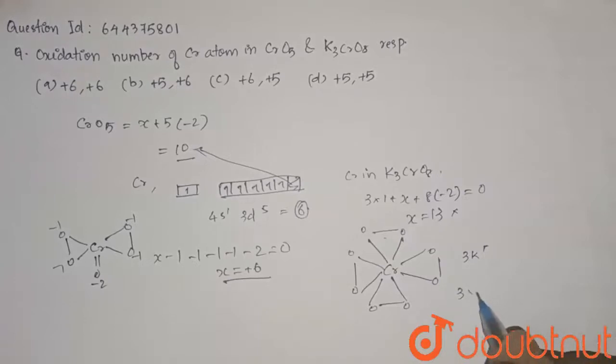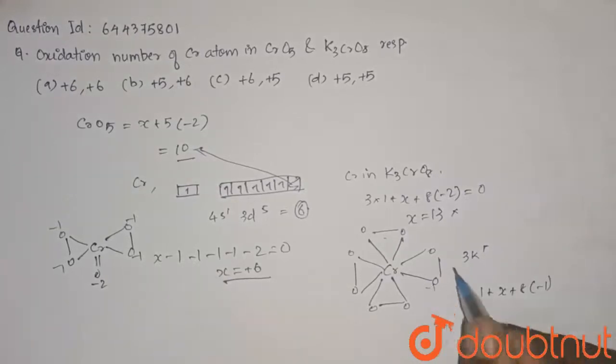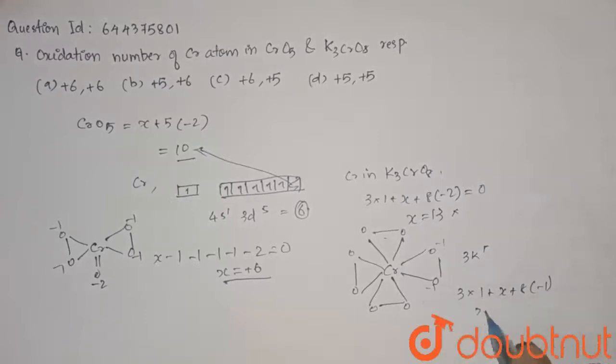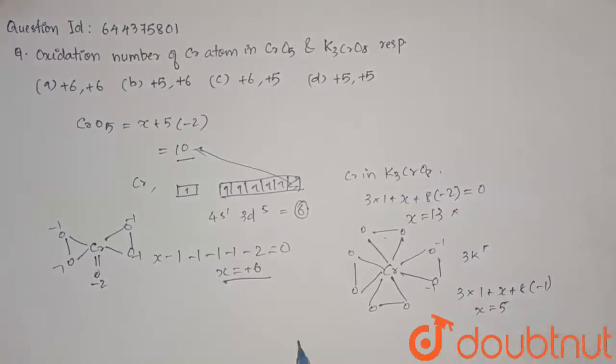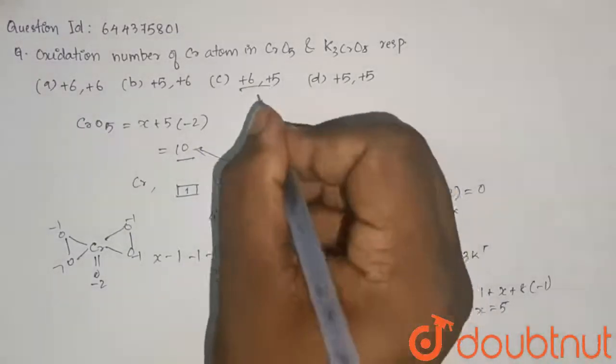The answer is 3 into 1 plus X plus 8 into minus 1. All this oxygen will be minus 1. So our answer is X is equal to plus 5. The final answer is plus 6, plus 5 and that is option C.